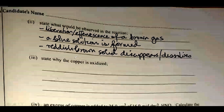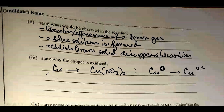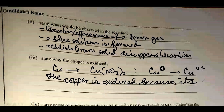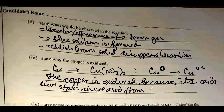State why copper is oxidized. Copper changes from Cu to Cu(NO₃)₂, meaning copper goes from oxidation state zero to +2. Copper is oxidized because its oxidation number (oxidation state) increased from zero to +2.